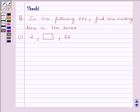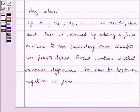First of all, let us understand the clear idea to solve the given question. If A1, A2, A3 is an AP, then each term is obtained by adding a fixed number to the preceding term except the first term. Fixed number is called common difference. It can be positive, negative or zero.